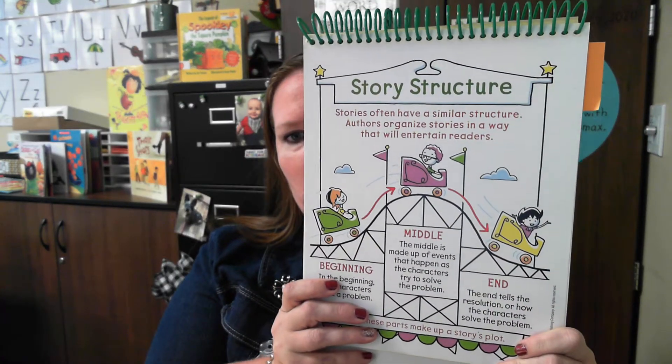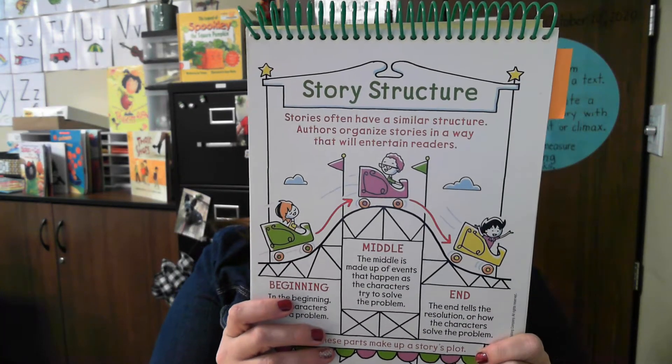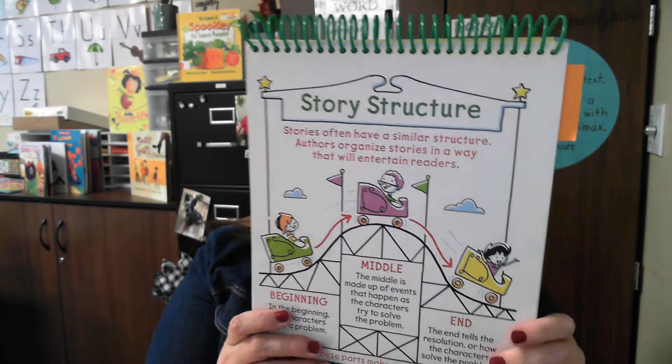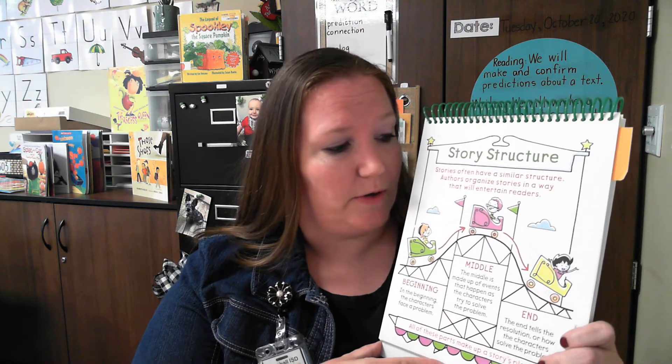I wanted to remind you that story structure is just like what we've been working on in our reading — making sure that we can identify the clear beginning, middle, and end. So as writers, we're copying what our authors are doing in our stories that we're reading. We want to make sure that the middle of our story has a big event. Sometimes that might be a problem, like if you're writing a spooky story this week, you might have something going wrong in your story.